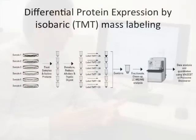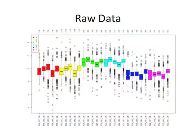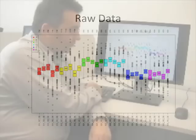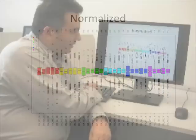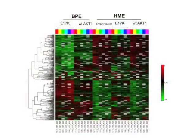We had two different cell lines in three different conditions. We took the cells, denatured, reduced and alkylated, digested with trypsin, labeled with TMT, and then analyzed with a mass spectrometer. This gives us a lot of raw data that needs to be normalized, which we do with in-house software. Here you can see the data after normalization. With this method, you can identify thousands of proteins — in this case, more than 1,500 proteins were identified.